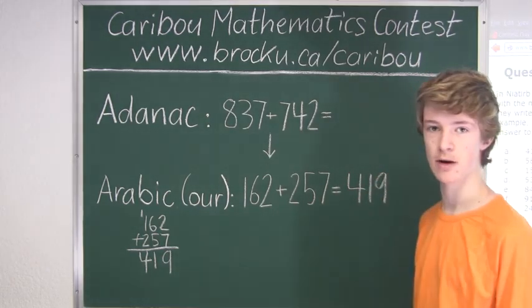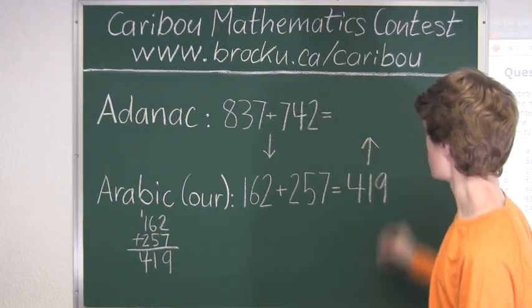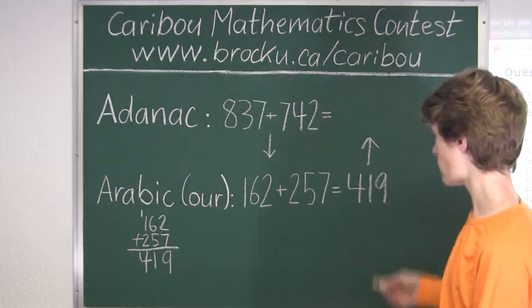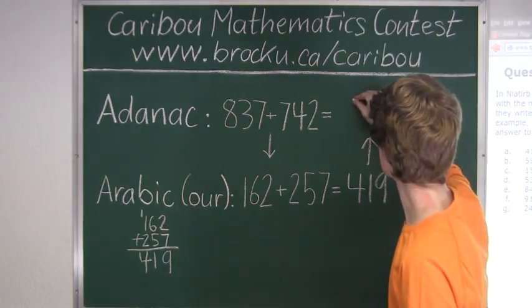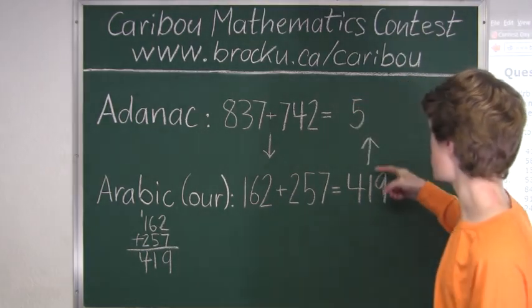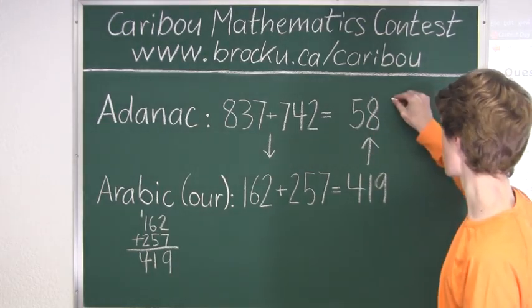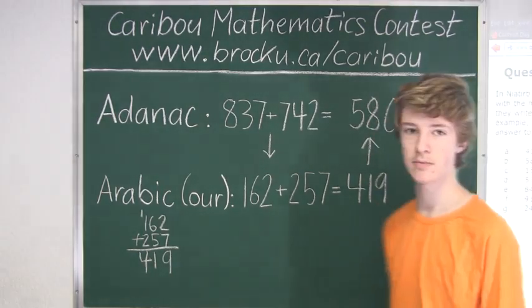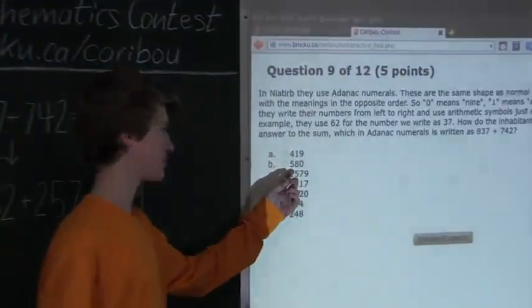But since we want the result in Adenac numerals, we will have to convert back. So we will use the same method as before, and do 9 minus 4 is 5, 9 minus 1 is 8, and 9 minus 9 is 0. So the result is 580, which is right here.